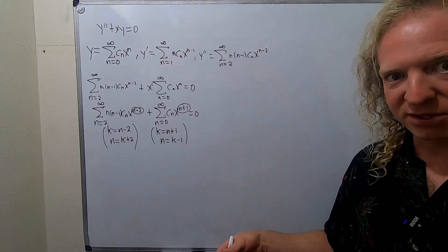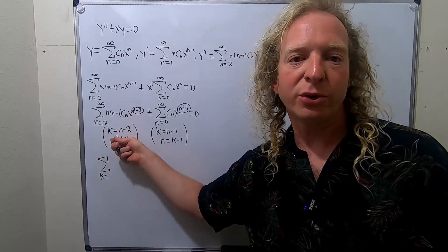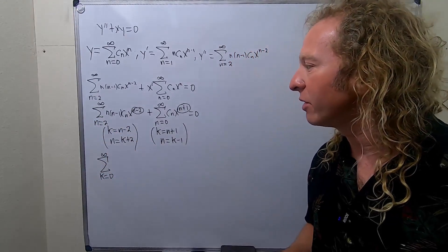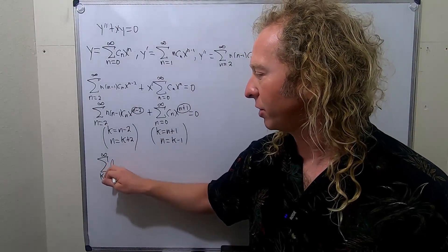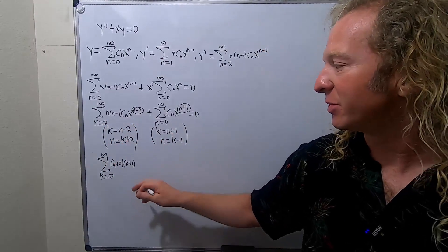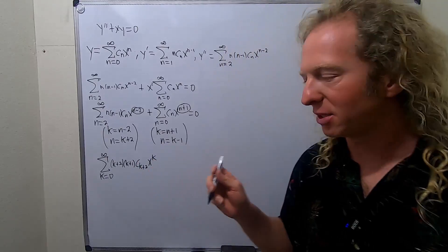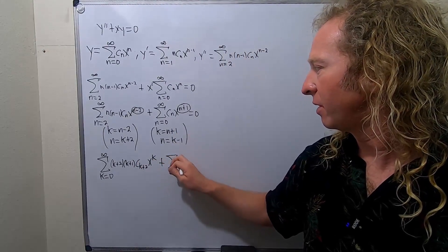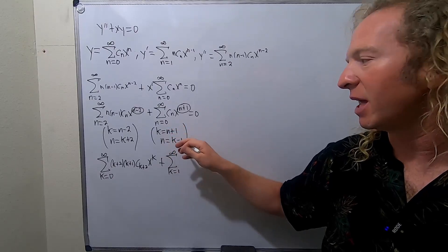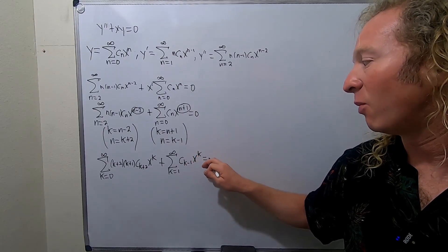Now make the substitutions. For the first sum: when n is 2, k is 2−2=0, so it runs from k=0 to infinity. All the n's become k+2, so we get (k+2)(k+1)·c_{k+2}·x^k. For the second sum: when n is 0, k is 0+1=1, so it runs from k=1 to infinity. And c_n becomes c_{k−1}, giving c_{k−1}·x^k. That was the whole point — we wanted x^k in both.